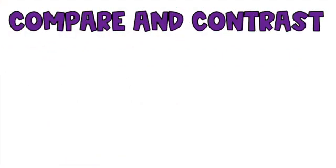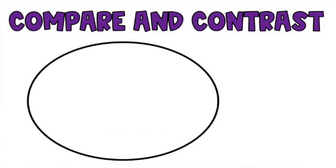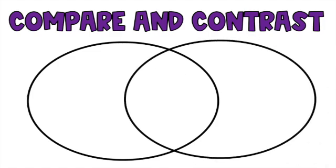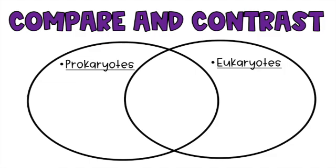Now we're going to compare and contrast. When comparing and contrasting we often use a thinking map — some call this a double bubble or a Venn diagram. Go into your Google Doc if you've been assigned this by your teacher and create this double bubble thinking map. We put two items on either side: prokaryotes on the left and eukaryotes on the right.